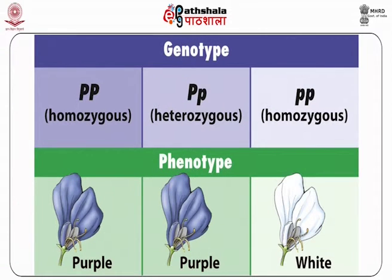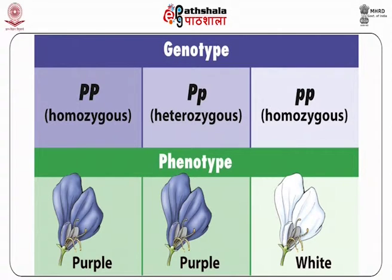If the two alleles of an inherited pair differ — i.e., the condition of heterozygosity — then one determines the organism's appearance and is called the dominant allele. The other has no noticeable effect on the organism's appearance and is known as the recessive allele. Thus, in the example, the dominant purple flower allele will hide the phenotypic effect of the recessive white flower allele. This is known as the law of dominance.